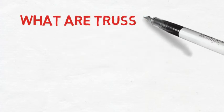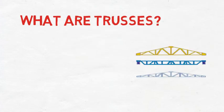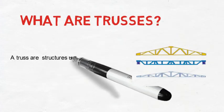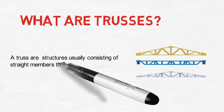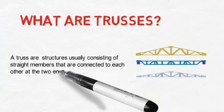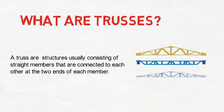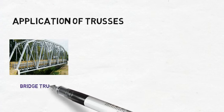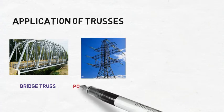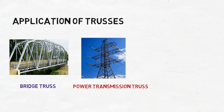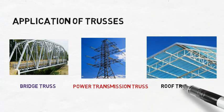What are trusses? Trusses are structures usually consisting of straight members that are connected to each other at the two ends of each member. Applications of trusses: trusses can be found in bridge structures, power transmission, and roof structures.